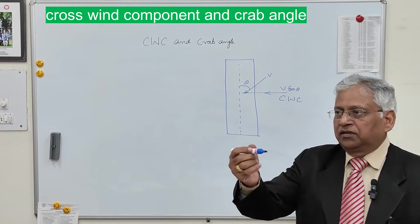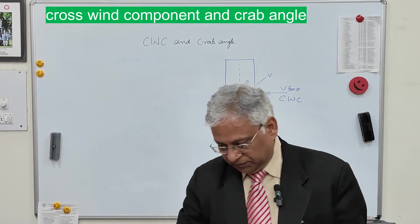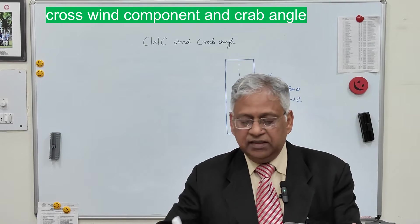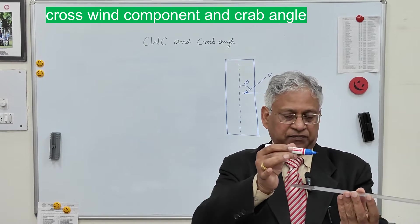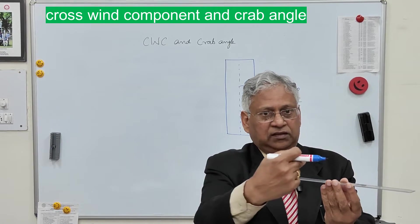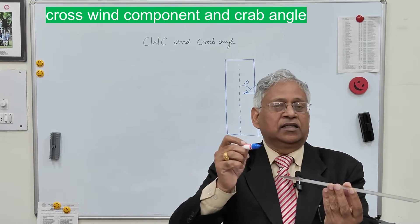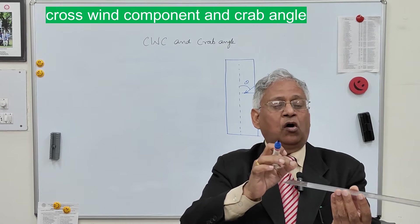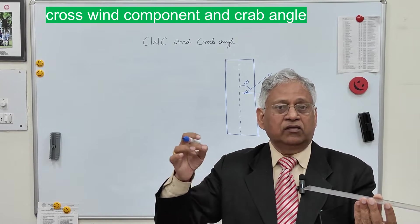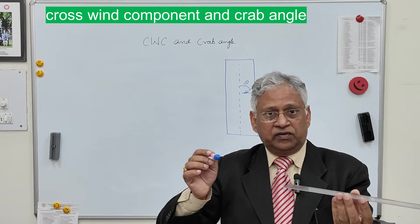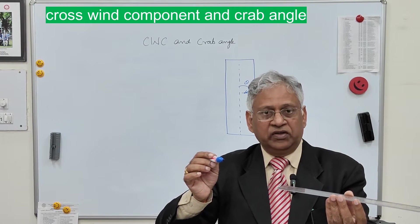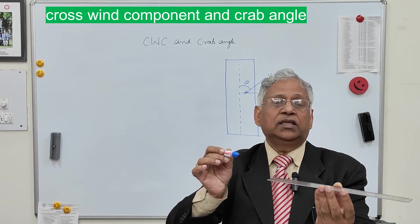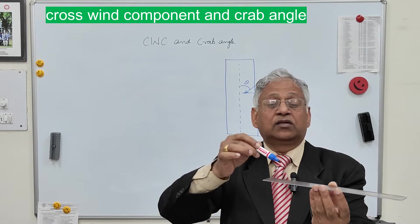When an aircraft heads for landing and there is a crosswind, the aircraft should move along the center line or extended center line of the runway. In the presence of this crosswind, the nose of the aircraft will make a certain angle with the center line of the runway in a horizontal plane.